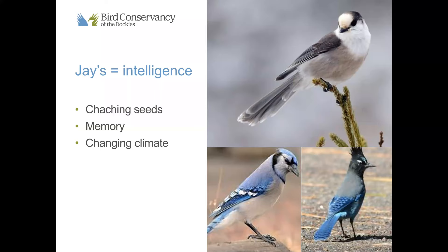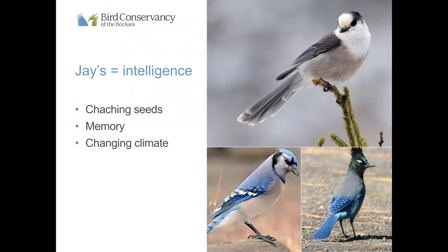The corvid family is so intelligent that winter is just a breeze for them — they can eat so many different types of food. If you've ever gone to a campground or gone skiing in winter, these jays will come right up to you and try to get a little bit of your snack. For our large birds, we'll be talking about crows and ravens, geese, and briefly grouse. Crows and ravens are also in the corvid family, but I wanted to split them based on size because they exhibit different behavior in winter.